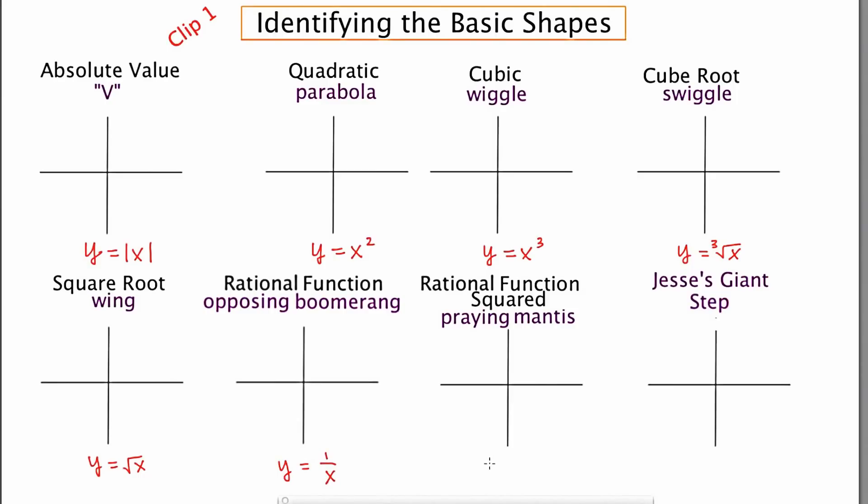And the next one is the rational function squared, or 1 over x squared. And the last one you probably have not seen before, it's y equals the absolute value of x over x. And this particular graph comes up a few times in calculus, so we present it here.